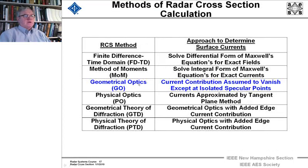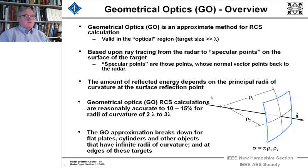Next we're going to discuss geometrical optics, that method of calculating the radar cross-section. And the current contribution is assumed to vanish except at isolated specular points. That's the basis of this method.